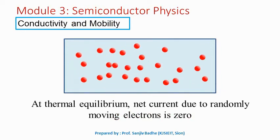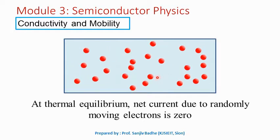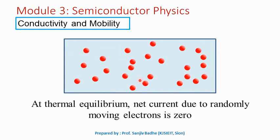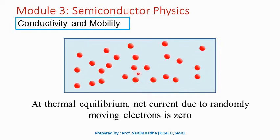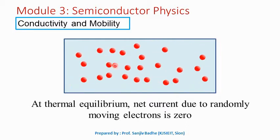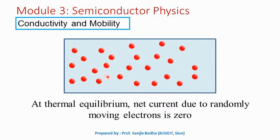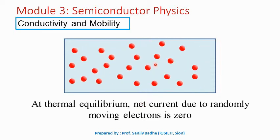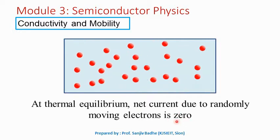In a solid, the charge carriers are in a state of random motion. At room temperature, the thermal motion of an individual electron may be visualized as random scattering from lattice atoms, impurities and other electrons. The electrons — charge carriers — are moving randomly, some in this direction, some in that direction. At thermal equilibrium, the net current due to these randomly moving charge carriers will be zero.